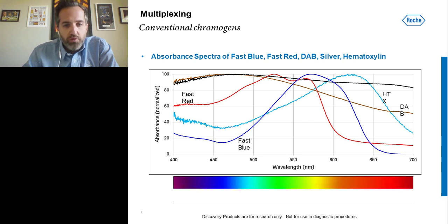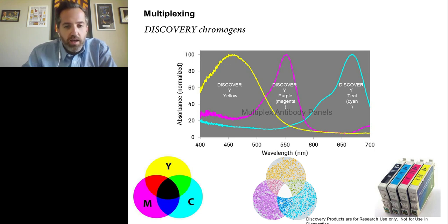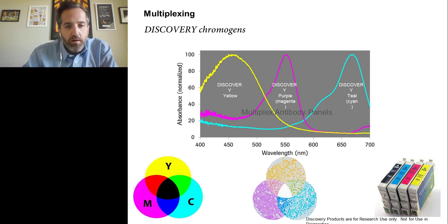If we layer additional chromogens and counterstains such as hematoxylin, DAB, and silver, there is such a broad array of spectra that it's very difficult to see co-localization events. The new Discovery chromogens we've created are very much based around the HP inkjet printer concept, where three different color cartridges create any particular color by overlapping. Discovery Yellow, Purple, and Teal all have very narrow absorbent spectra, so when they overlap it's very easy to see co-localization events and to deconvolute using image analysis tools.